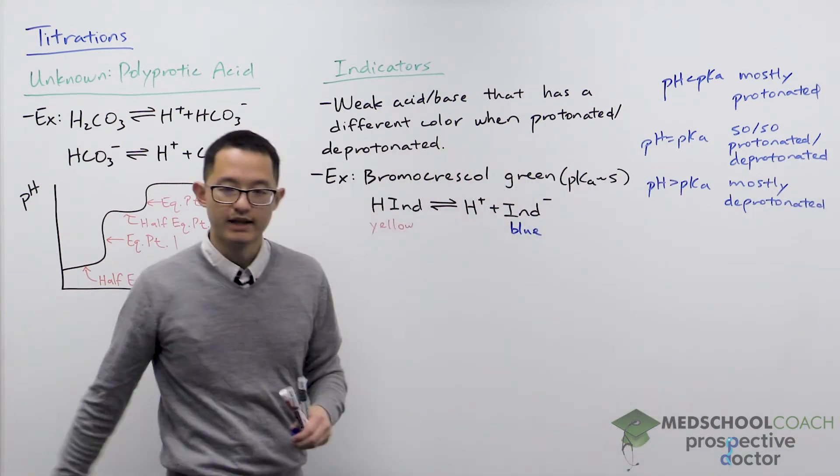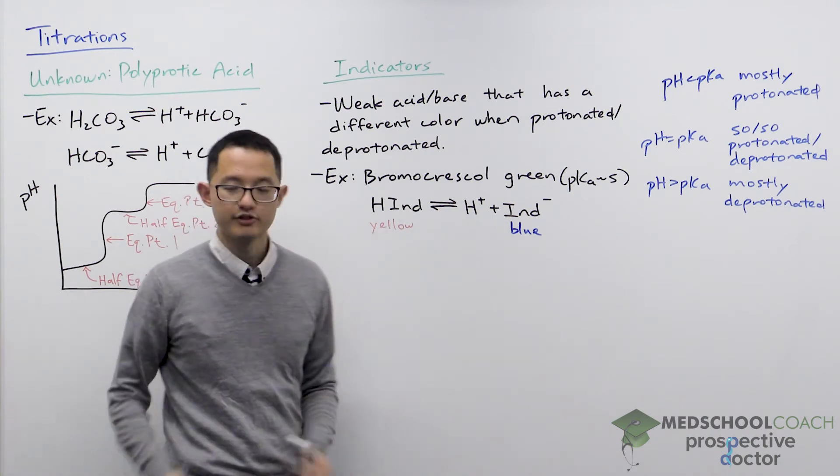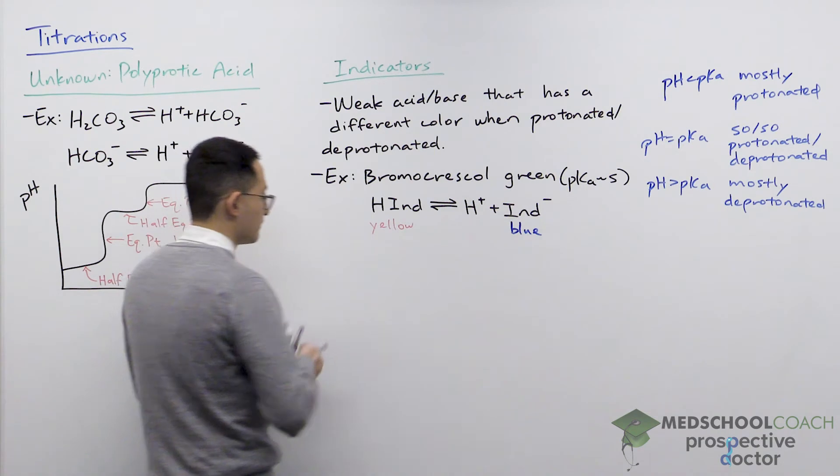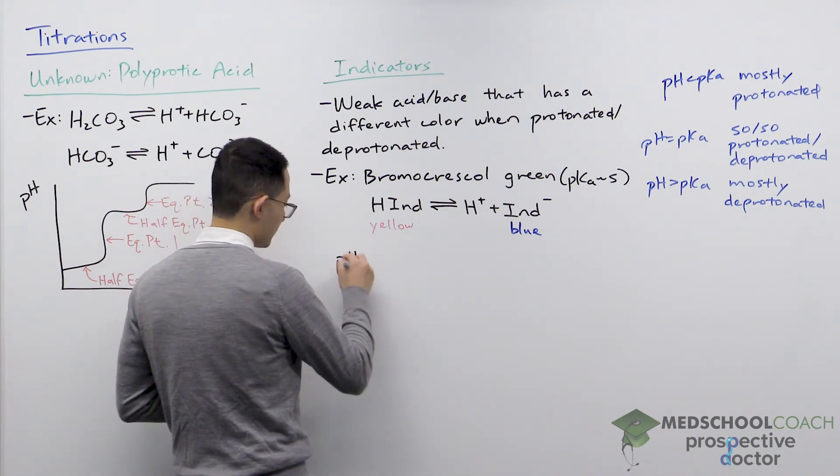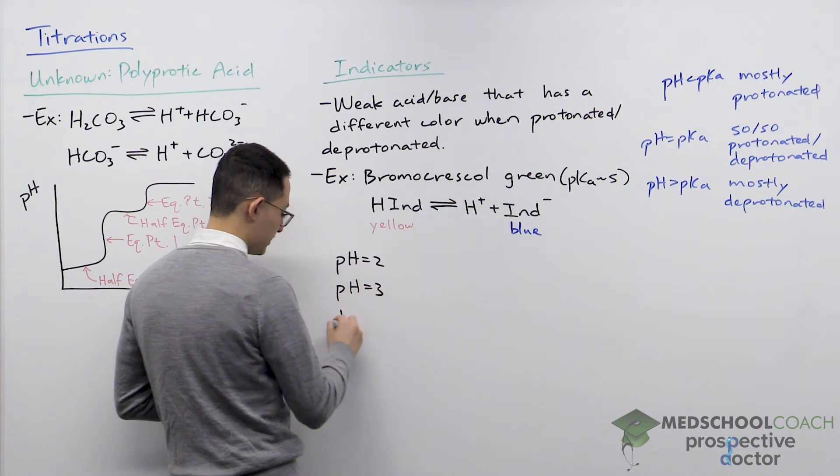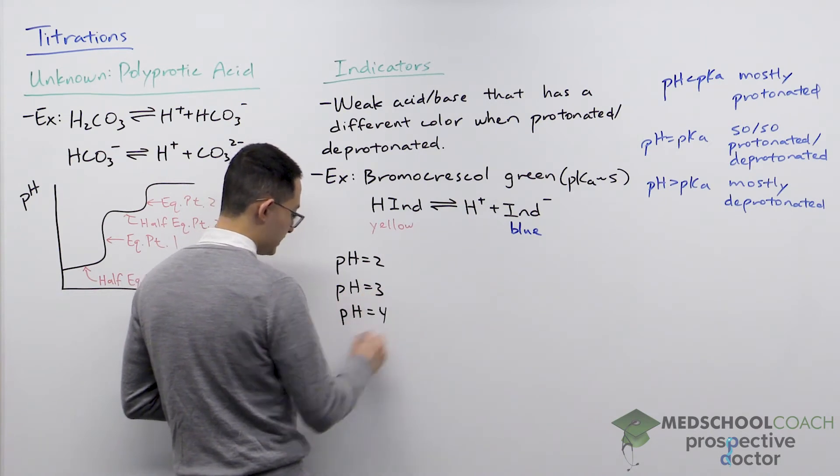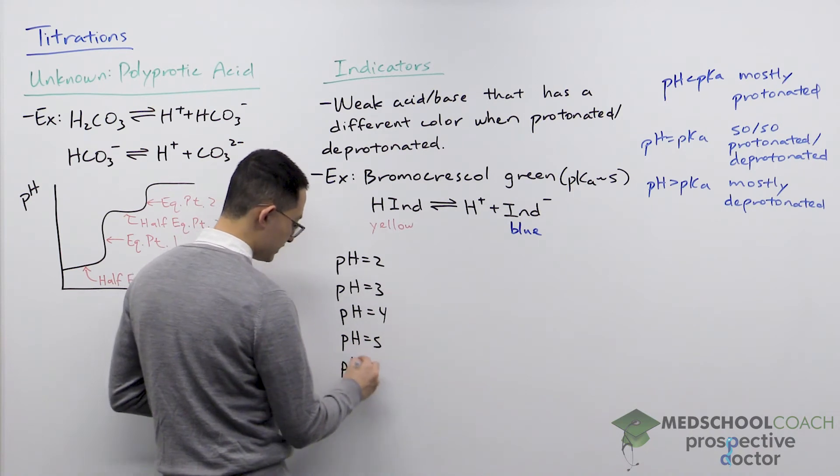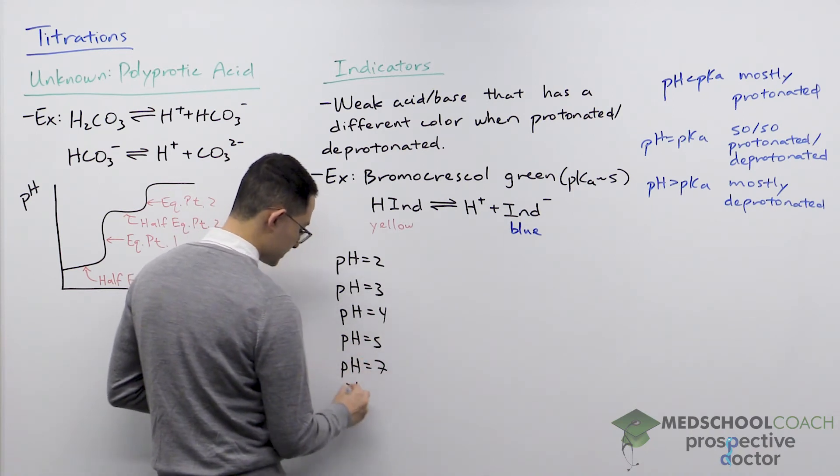Knowing this information, let's take a look at a solution of bromocresol green at different pH values. We can consider, for instance, a pH of 2, a pH of 3, pH of 4, pH of 5, pH of 7, and a pH of 10.